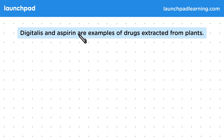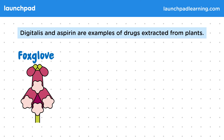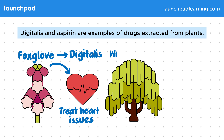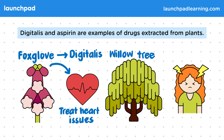Digitalis and Aspirin are examples of drugs extracted from plants. It was noticed that if people ingested foxgloves, it affected their heart, so Digitalis is now used to treat heart disorders. In the past, people used to chew on the bark of willow trees for pain relief, so now the active ingredient has been extracted and made into the pain-killing drug Aspirin.